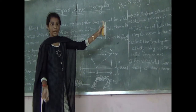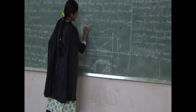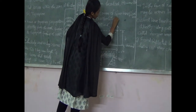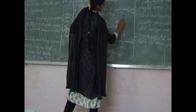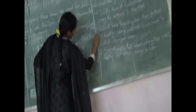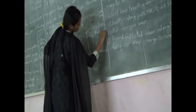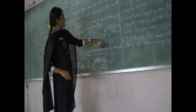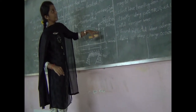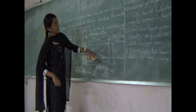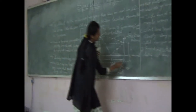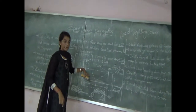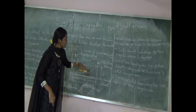Let us consider two antennas — one is the transmitter antenna and another one is the receiver antenna. They are placed above the earth anywhere in the troposphere, but not more than 50 km above the ground.